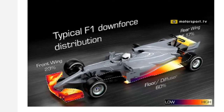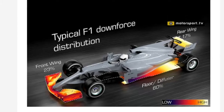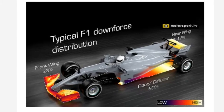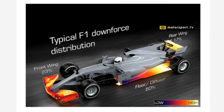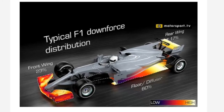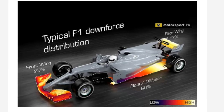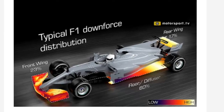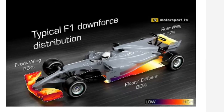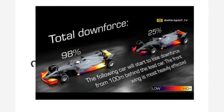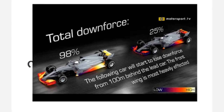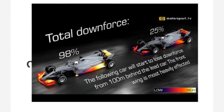Aerodynamic aids include the front wing, spoiler, and splitters — these are good things to provide downforce. Aerodynamic aids contribute about 23% downforce. The floor diffuser and the rear wing also contribute downforce.